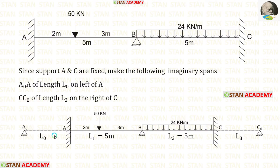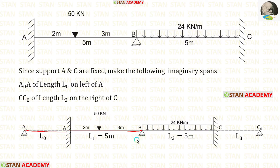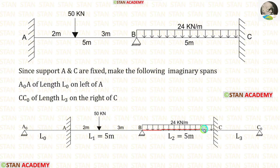You can see that I have created one imaginary span on the left of A. This span is A0A of length L0. On the right of C also I have created one span — it is CC0 of length L3. Now we can make three equations: using spans A0A and AB for the first equation, using spans AB and BC for the second equation, and using spans BC and CC0 for the third equation.